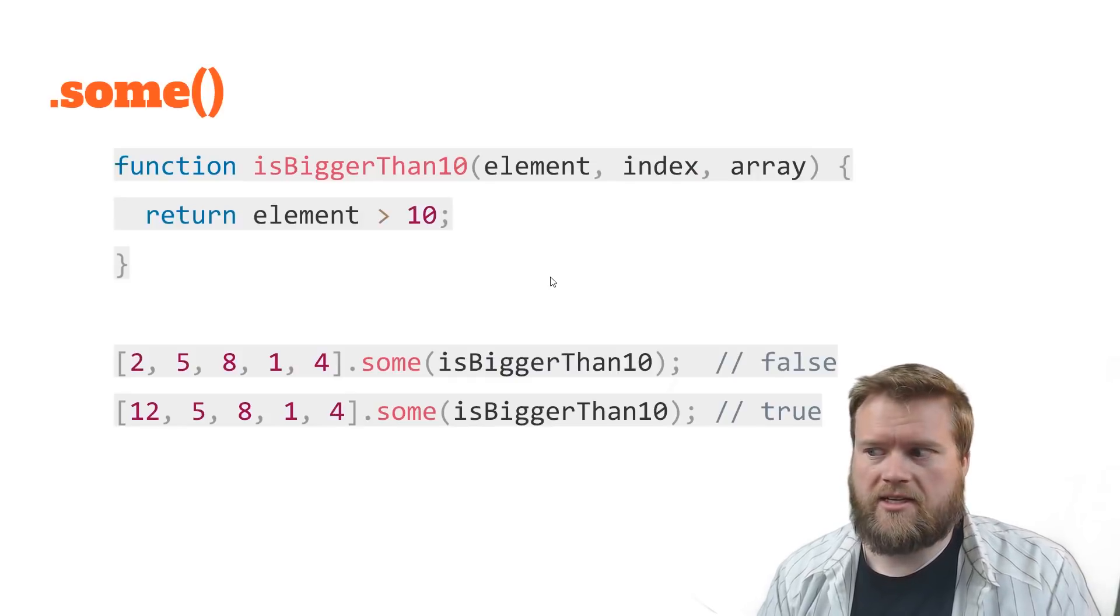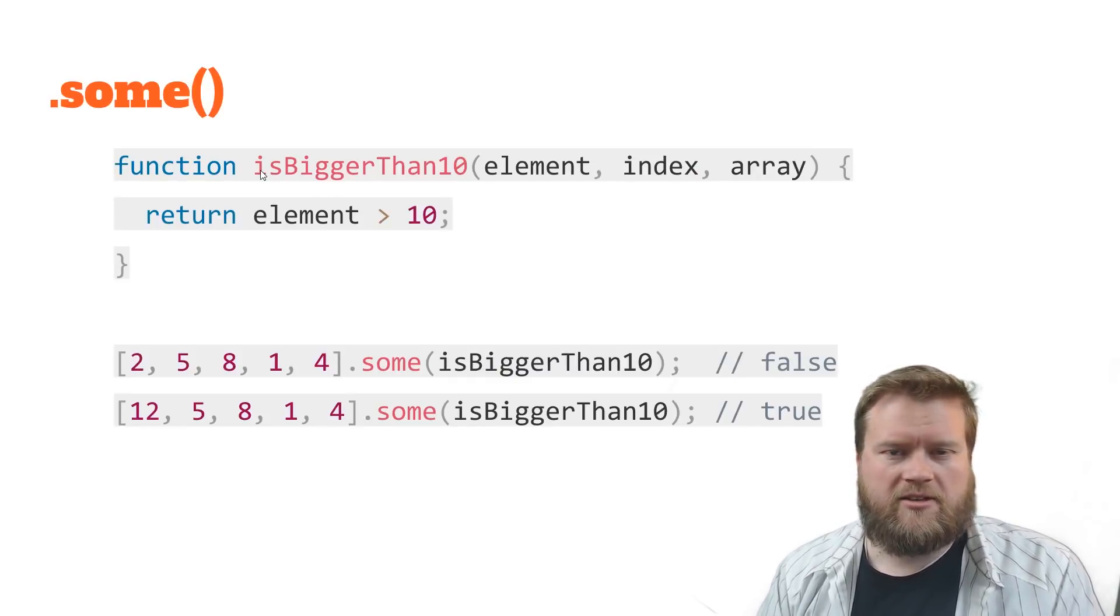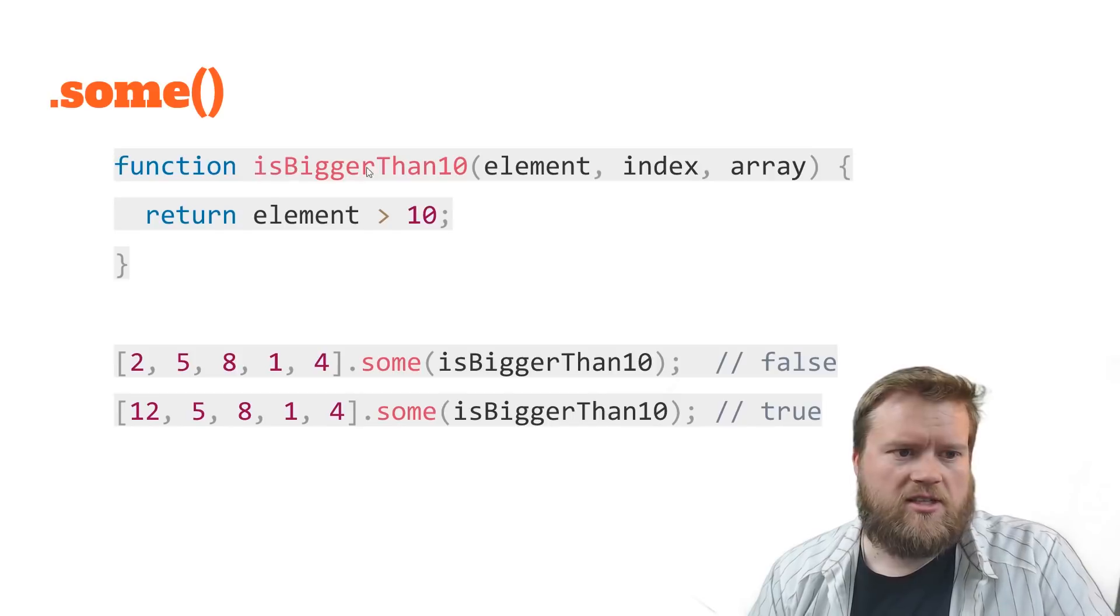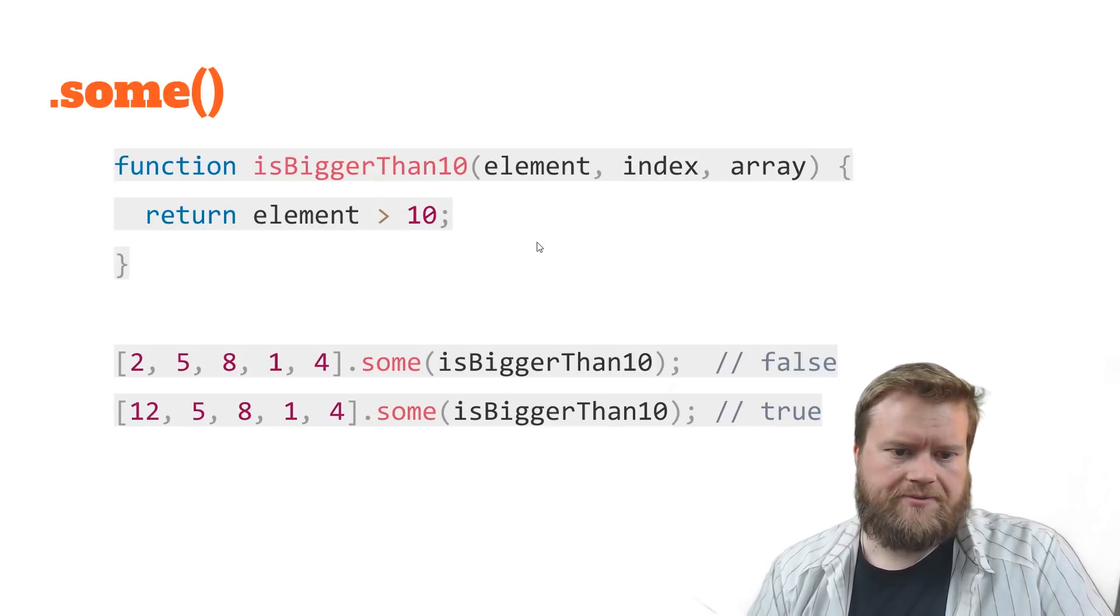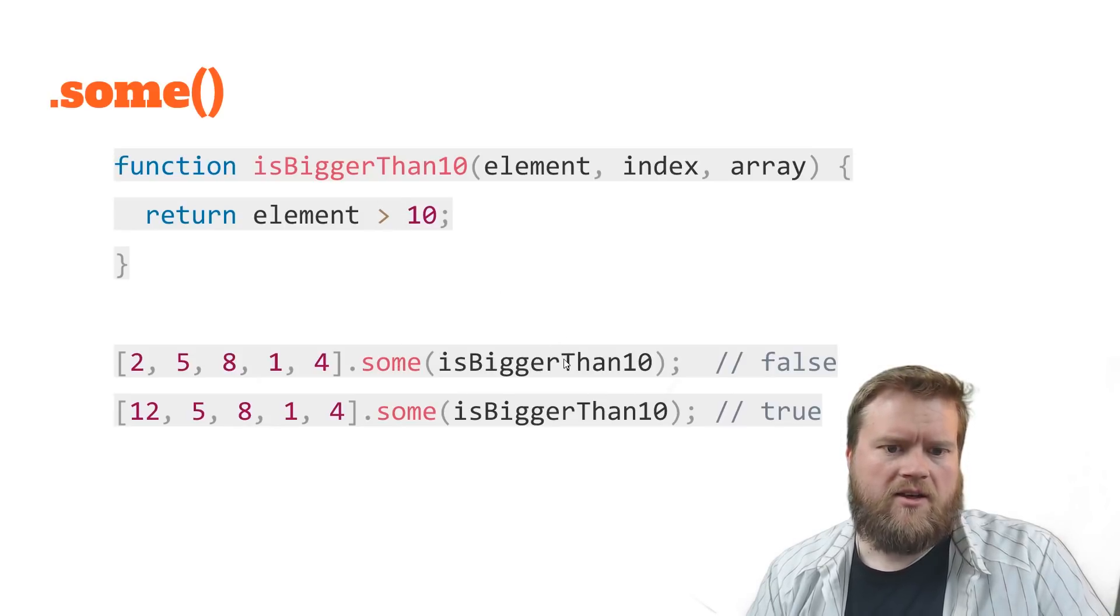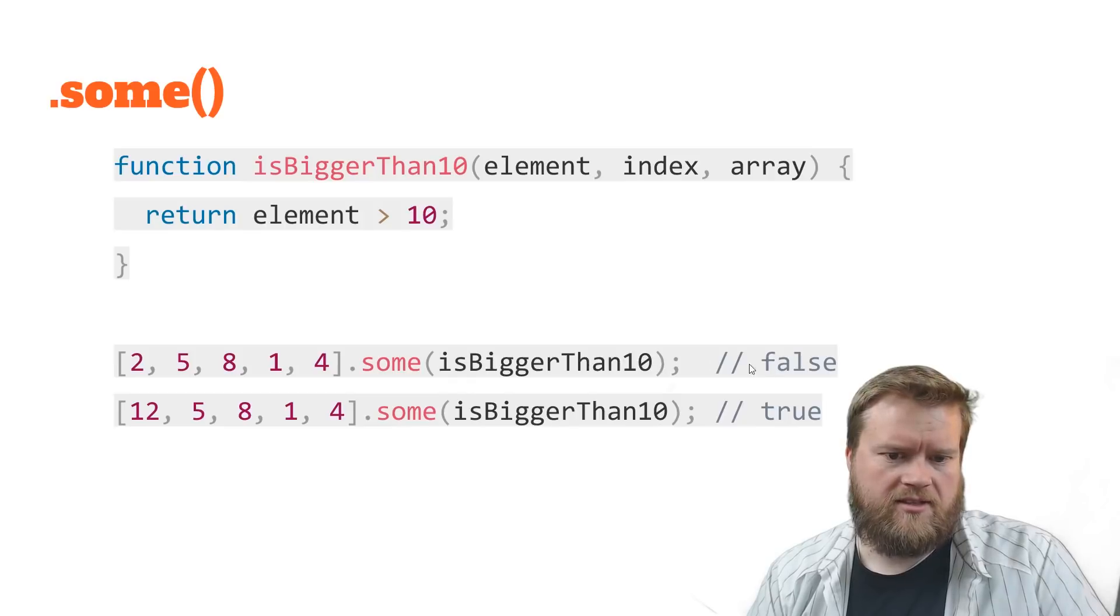Some is also really easy to use. There's also every, which is sort of the other one function. So you can do function is bigger than 10. So what this does is if you pass in element greater than 10, it says true or false there. So what this does is say, it says you pass in 2, 5, 8, 1, 4. So if any one of these values is greater than 10, then it would return false. So all of these are less than 10, so it returns false.